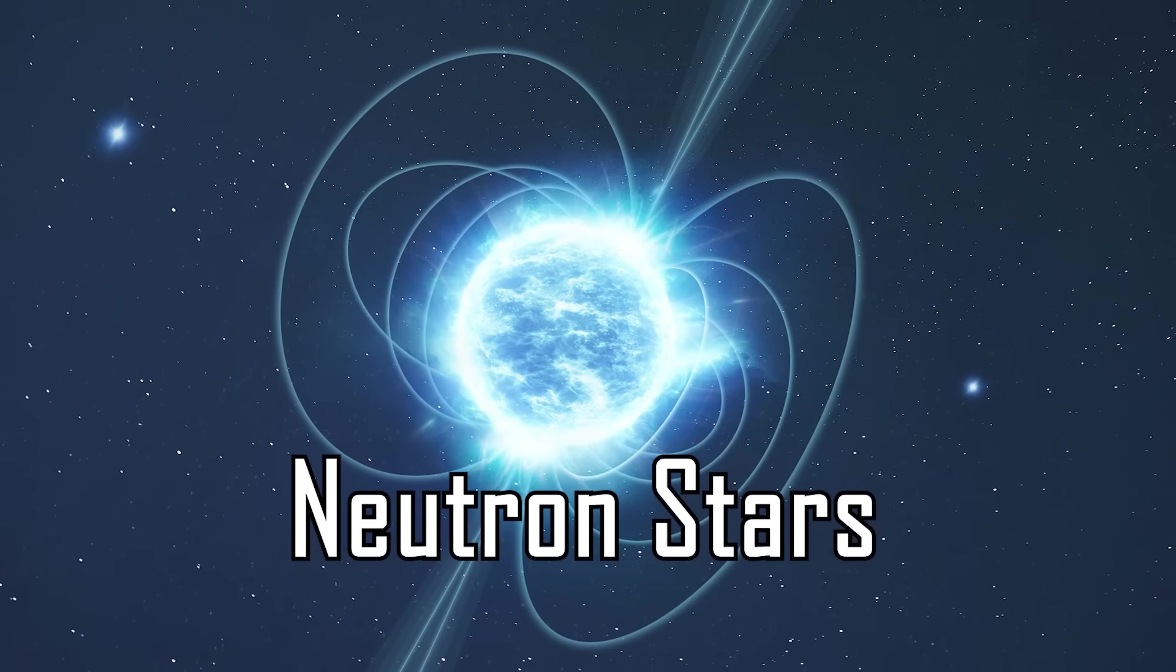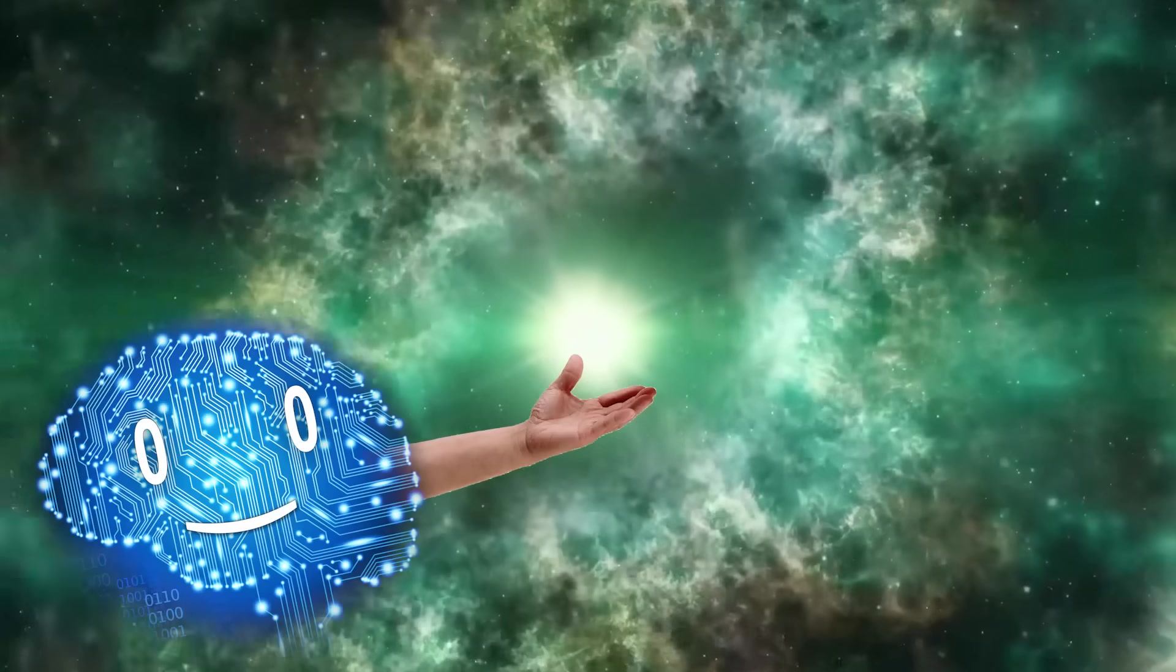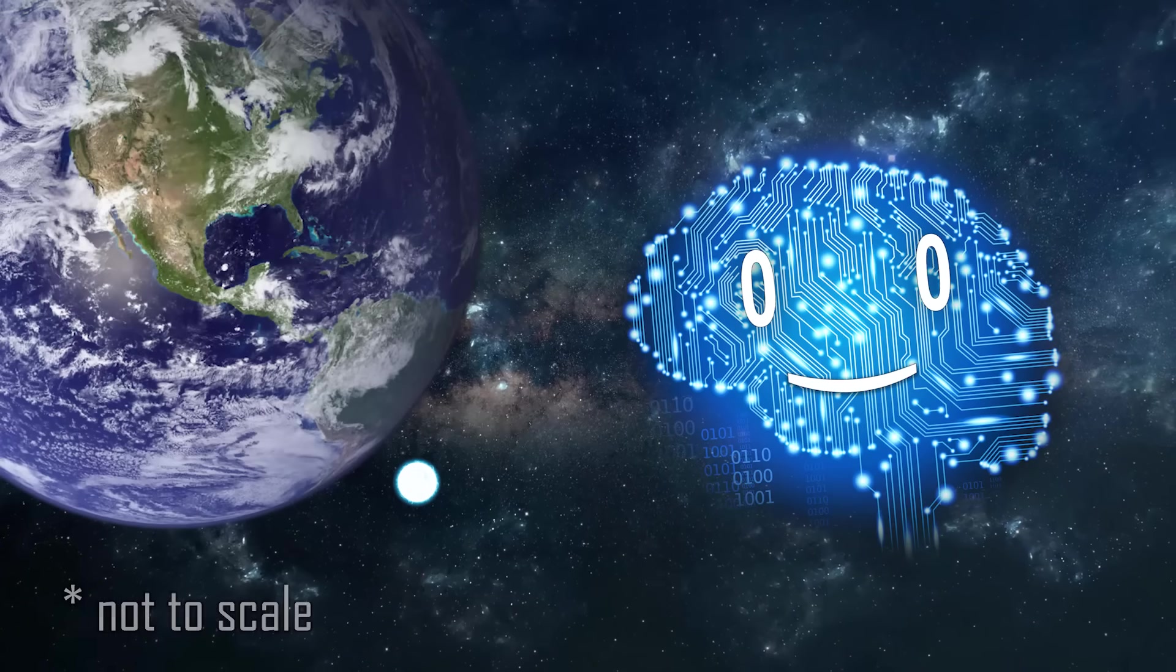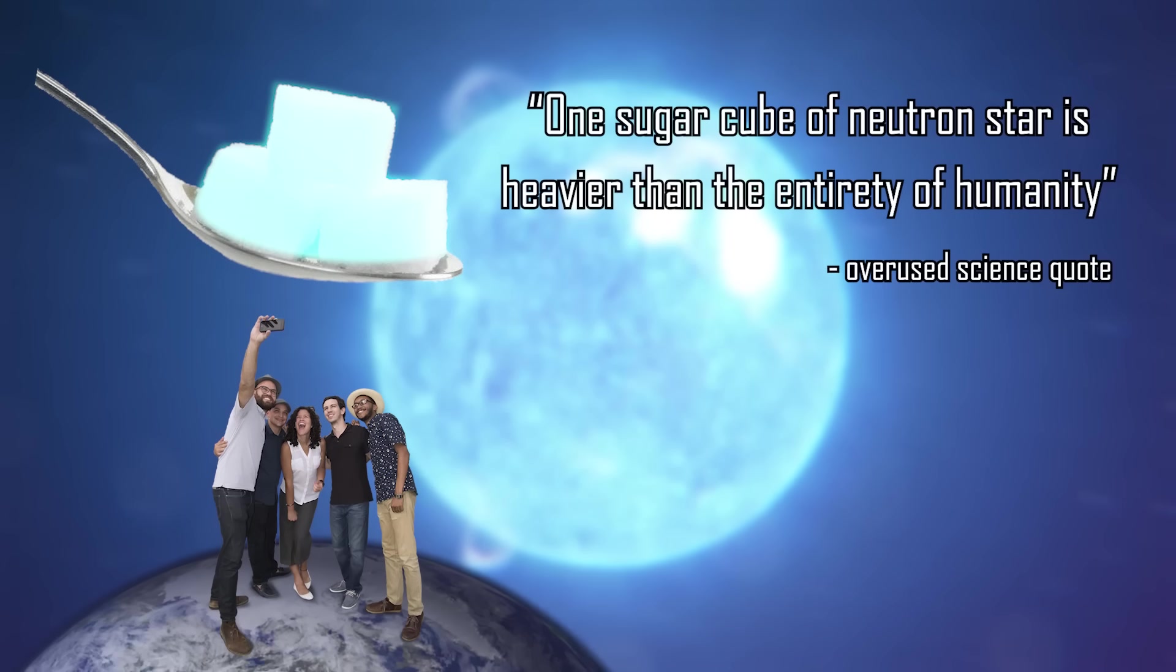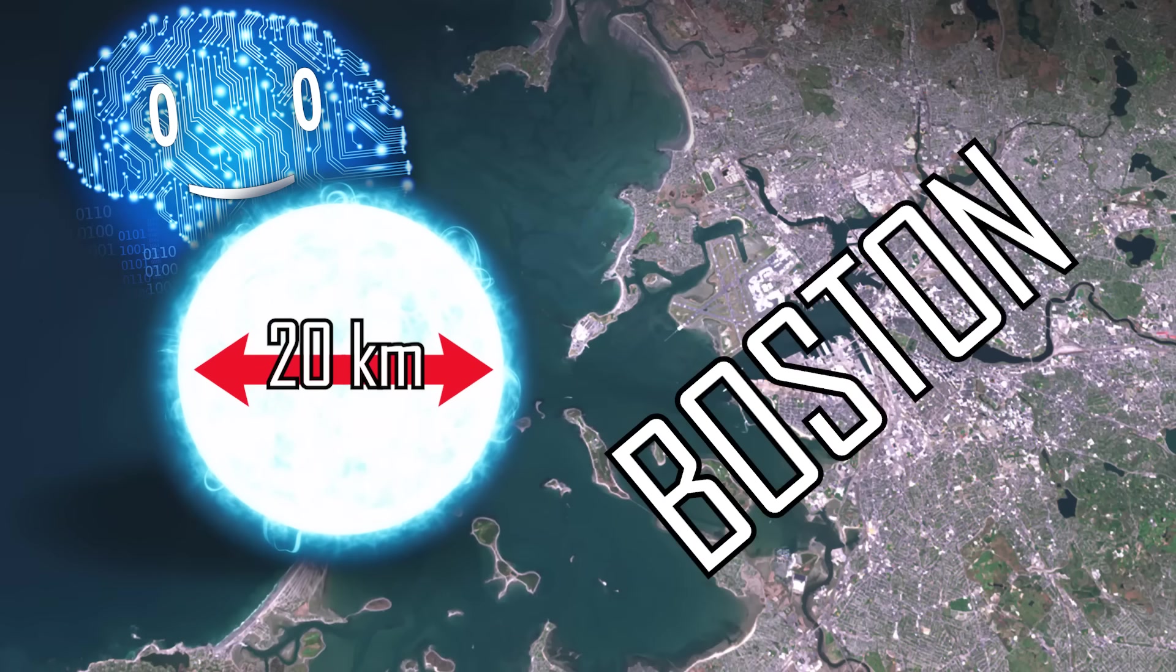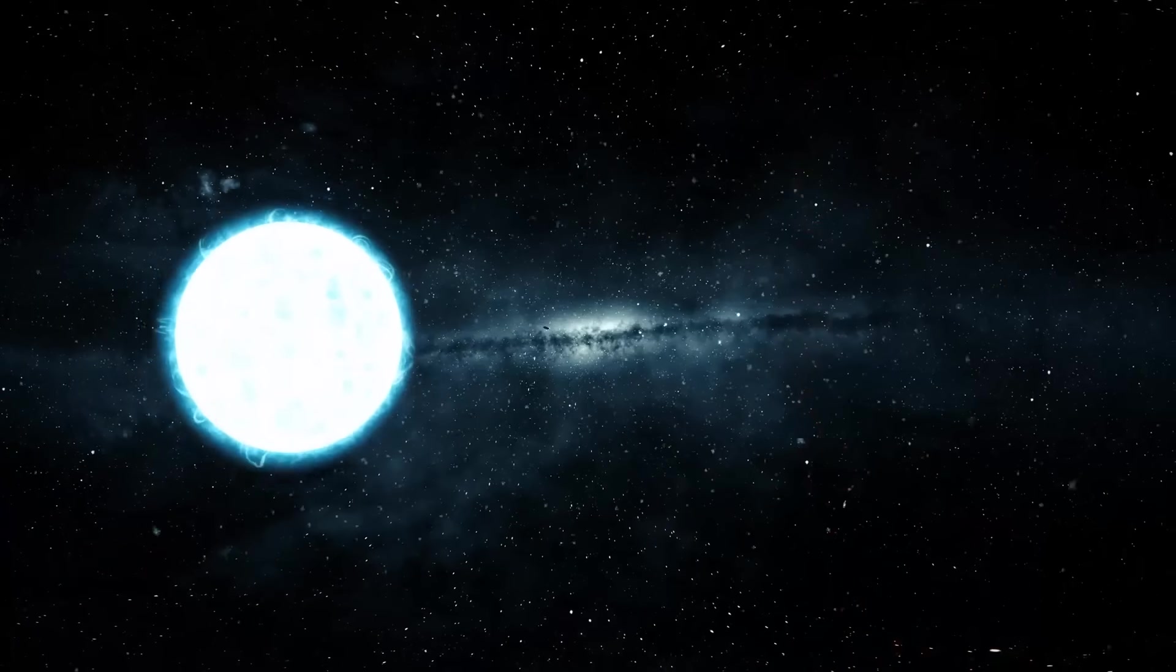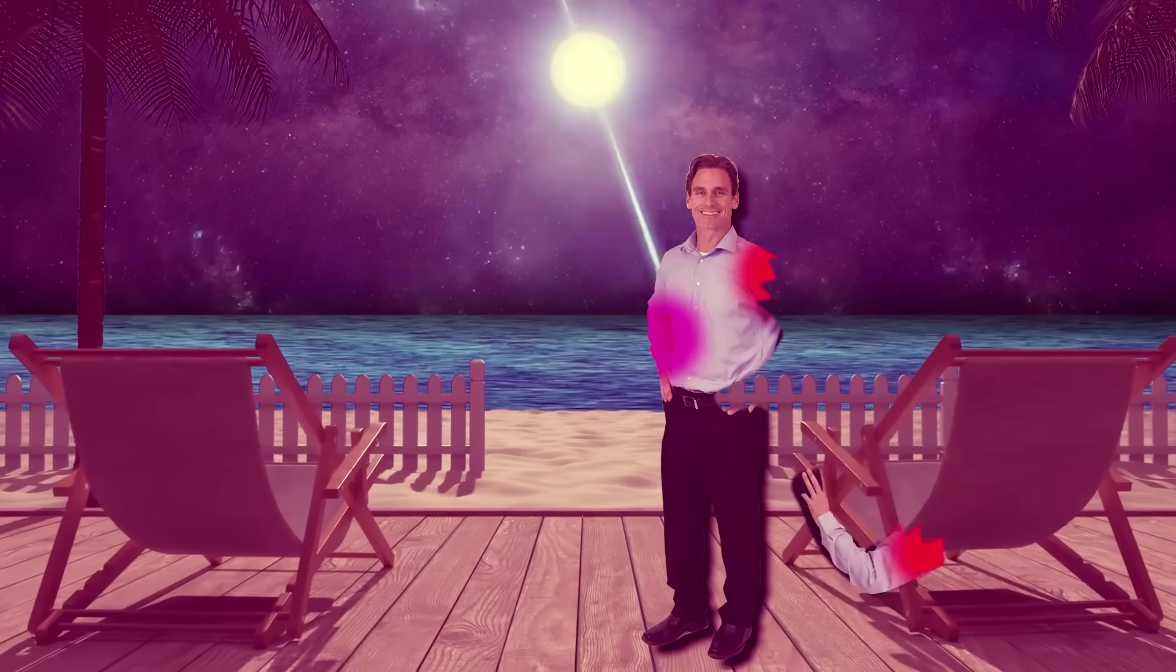Neutron stars. When huge stars die, we can get neutron stars as leftovers at their core. You probably already know the deal, super hot, super small and super dense. One sugar cube of neutron star is heavier than the entirety of humanity, all while the star itself is merely 20 kilometers across. Yet given its density, its gravitational attraction is that of up to three suns, and a surface temperature 100 times hotter.